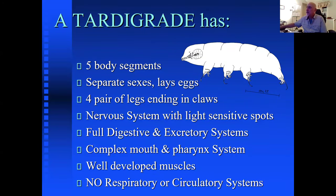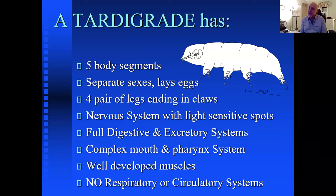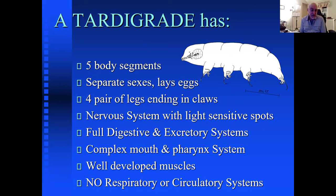Here are some little-known facts about tardigrades. They have five body segments, separate sexes, lay eggs, and have four pairs of legs — that's eight legs total. Comparing leg counts: humans have two, four-legged animals have four, a starfish has five, and spiders have eight — similar to the tardigrade. Six legs is very common for insects, so eight legs is a bit rare.